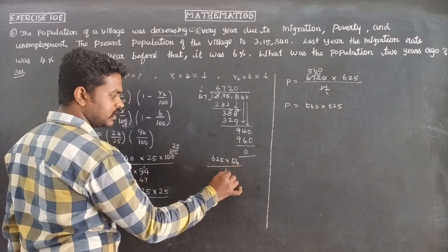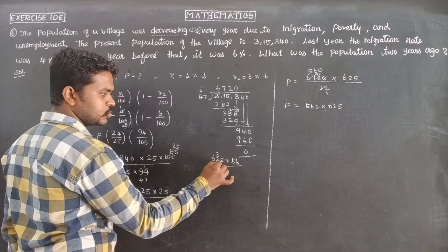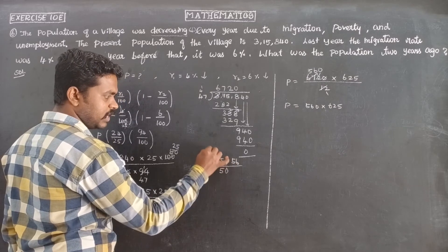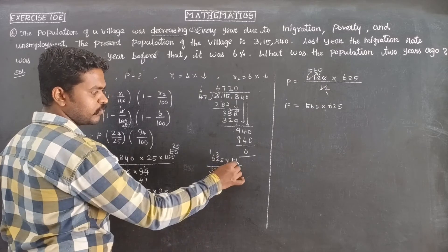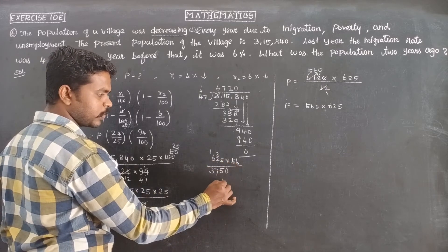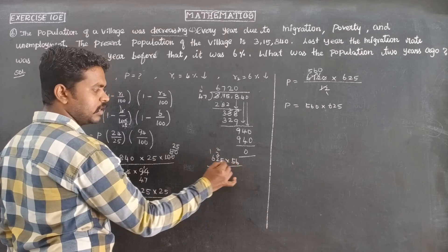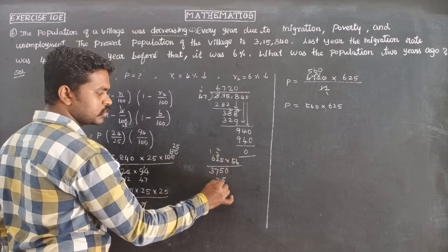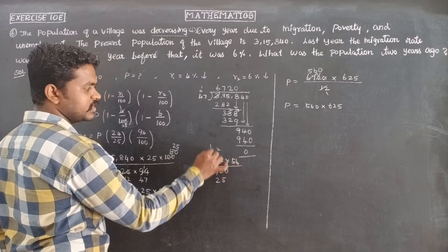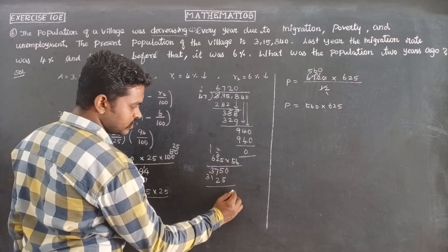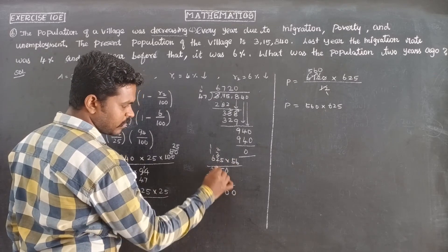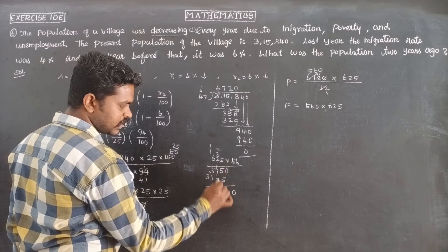Multiplying 560 times 625: 5 times 6 is 30, remaining 3. 6 times 2 is 12, plus 3 is 15, remaining 1. 6 times 6 is 36, plus 1 is 37. Then 5 times 5 is 25, remaining 2. 5 times 2 is 10, plus 2 is 12, remaining 1. 5 times 6 is 30, plus 1 is 31. Adding: 5 plus 5 is 10, remaining 1. 7 plus 3 is 10, remaining 1. 3 plus 2 is 5.